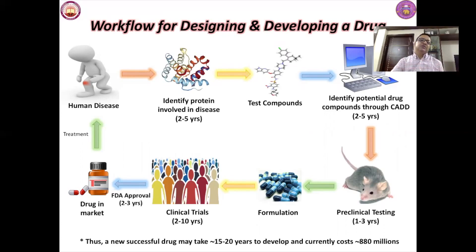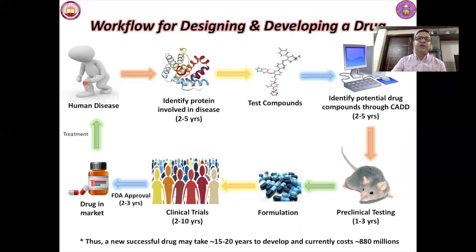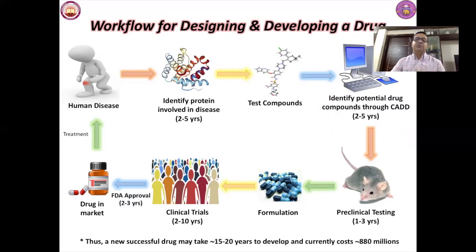The workflow for designing and developing a drug begins with identifying the human disease. Then you identify the protein involved in that disease — finding the correct protein can itself take two to five years. Once proteins are identified, you screen test compounds or materials either in silico or in the laboratory. Identifying potential drug compounds through in silico library screening can also take two to five years.